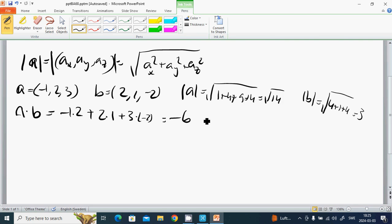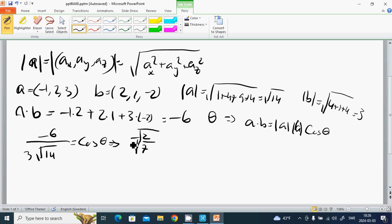And then the angle theta between a and b: we have a·b equals |a|·|b|·cos(θ), so -6 = √14 · 3 · cos(θ). Thus -6/(3√14) = cos(θ), which is -2/√7 = cos(θ), then θ equals 120 degrees.